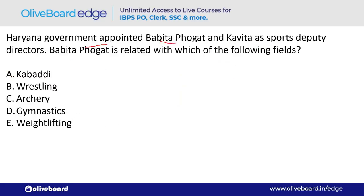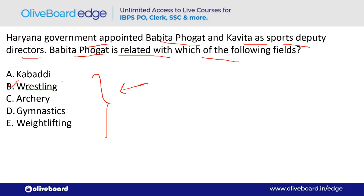The Haryana government appointed Bhavita Phogat and Kavita as sports deputy directors. They are associated with which sport? The answer is wrestling — option B. Remember: Bhavita Phogat is associated with wrestling. Wrestling, boxing, and weightlifting are often confused.